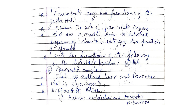Enumerate any two functions of the gastric hydrochloric acid. Mention the role of pancreatic enzymes. What are stomata? Draw a labelled diagram of stomata. Write any two functions of stomata. Write the function of the following in the digestive process: bile, pancreatic amylase. State the role of liver and pancreas. What is glycolysis?